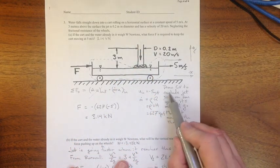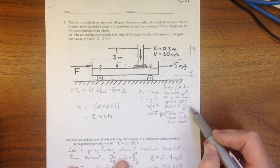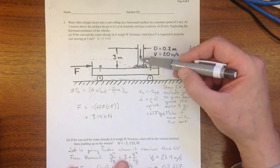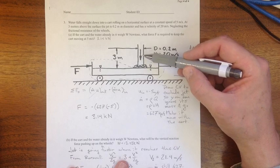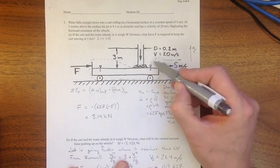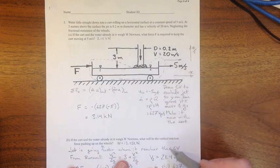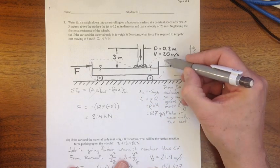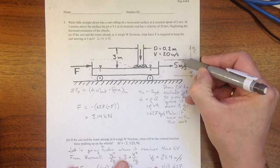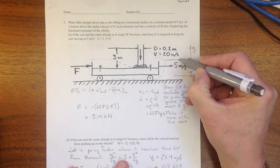So first off, I'm going to draw my control volume to exclude the jet, so we can ignore the jet's mass and the effects of gravity on it. So here's where I drew my control volume, this dotted line here.